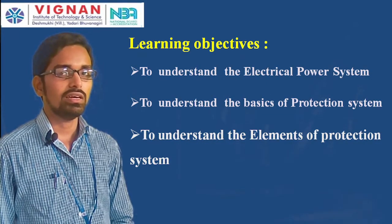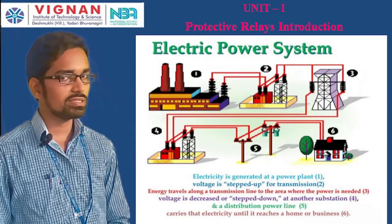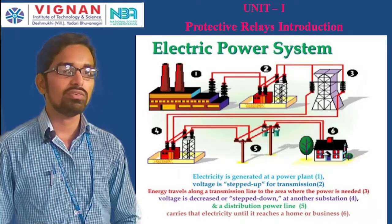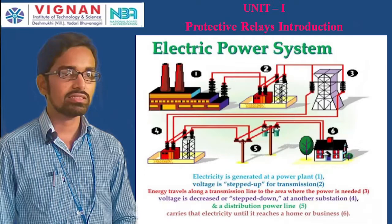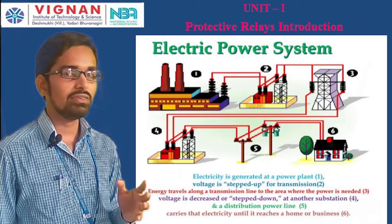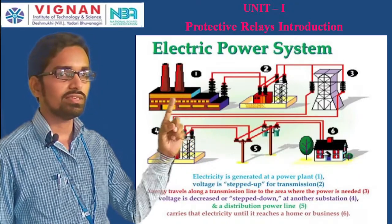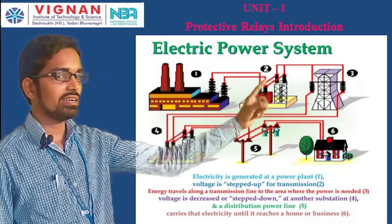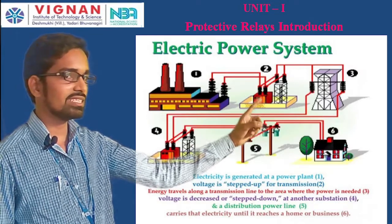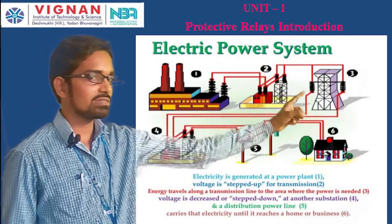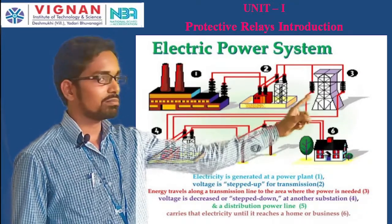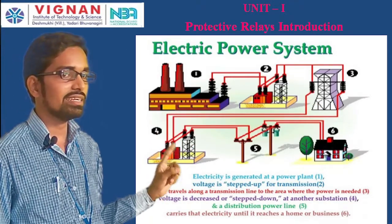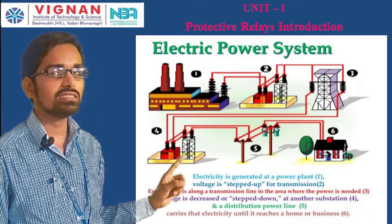In the power system, the main components start with the generating station which generates electrical power. That power is stepped up using a step-up transformer and then transmitted via transmission lines to distribution centers, where distribution transformers step the voltage down.